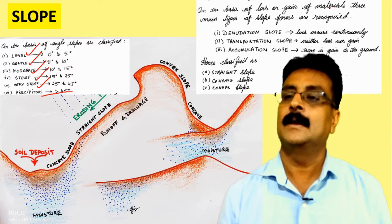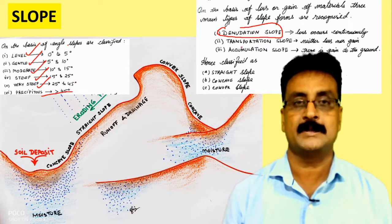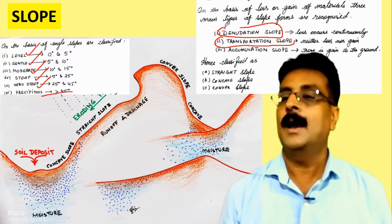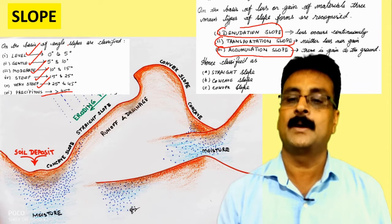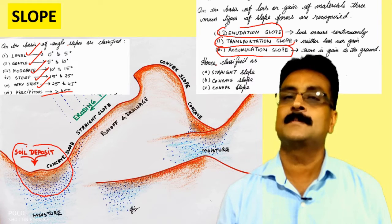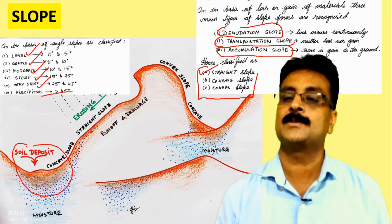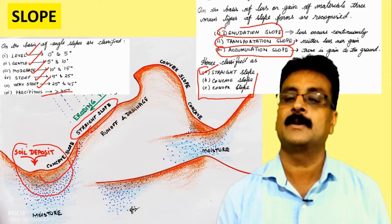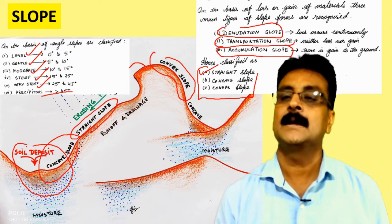On the basis of loss and gain of material, slopes are classified as: denudation slope where loss occurs continuously, transportation slope where there is neither loss nor gain, and accumulation slope where there is gain — for example, soil deposits. Further, on the basis of shape we have straight slope, concave slope, and convex slope.